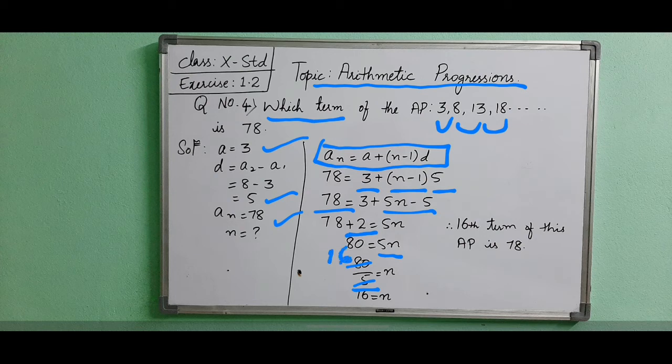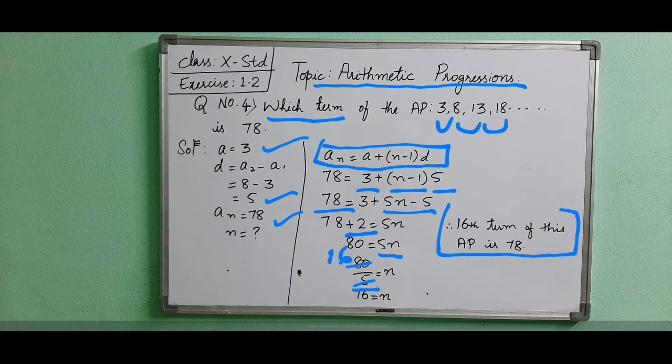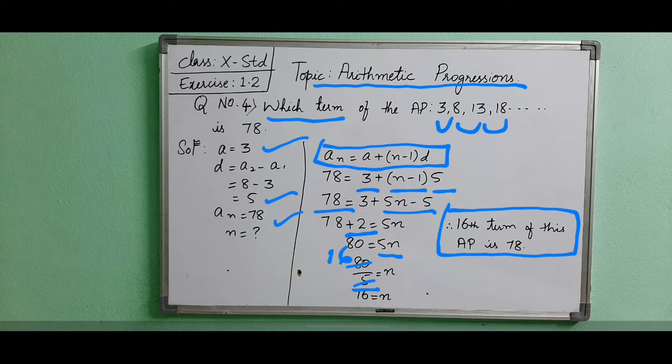What this means is the 16th term of the AP is 78. Only 4 terms are given in the question, but if we continuously write the terms, the 16th term will become 78.